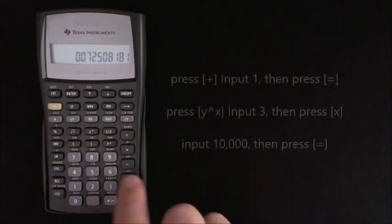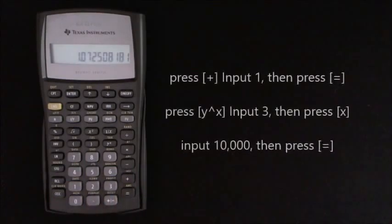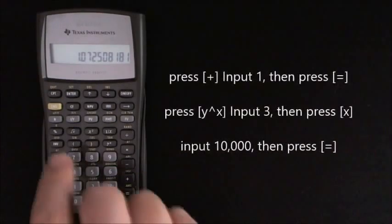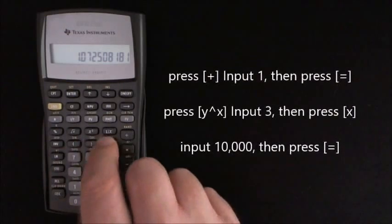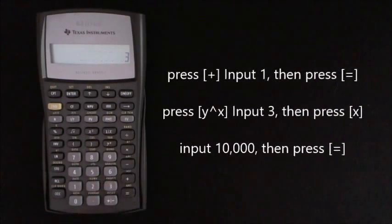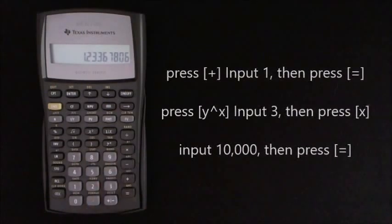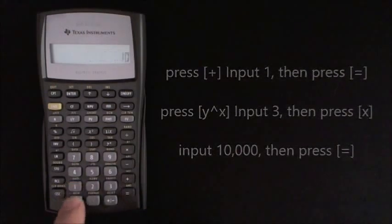So back to the question. Once we have the continuously compounding rate, press plus, then input 1, then Y to the power of X, input 3, then multiply that by 10,000.